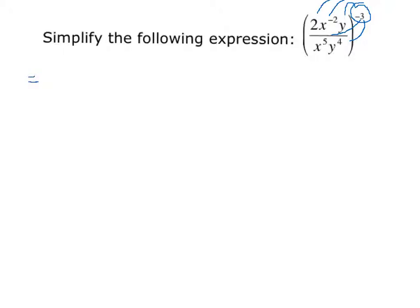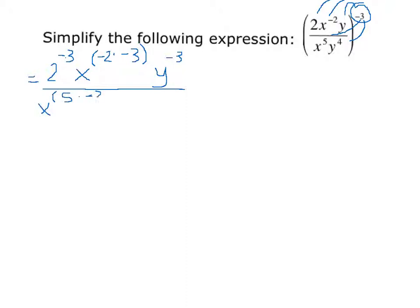If we were to rewrite this, we would have 2 to the negative third times x. And remember, using the power rule of exponents, if you have an exponential expression that is being raised to a power, you keep the same base but multiply the exponents together. So we have negative 2 times negative 3, and y to the negative third. Then in the denominator, we have x to the 5 times negative 3, again using that power rule for exponents, and y to the 4 times negative 3.